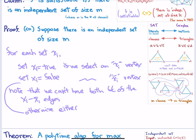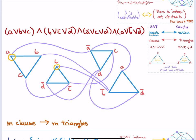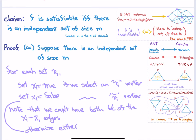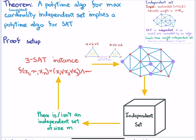Going through both directions: we start with a satisfying formula, construct the independent set, and double-check it's actually independent with the right size. Conversely, given an independent set of size M, we construct the assignment, use the xi–xi-bar edges to show consistency, and use the triangle edges to show all clauses are satisfied. We create this clever graph with triangular gadgets for clauses and edges between opposing literals. It wasn't so far from the initial student suggestion.